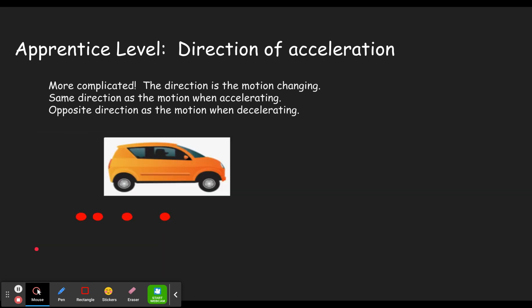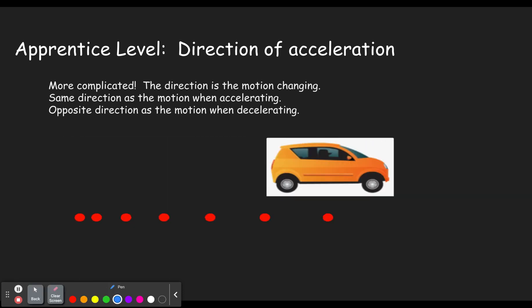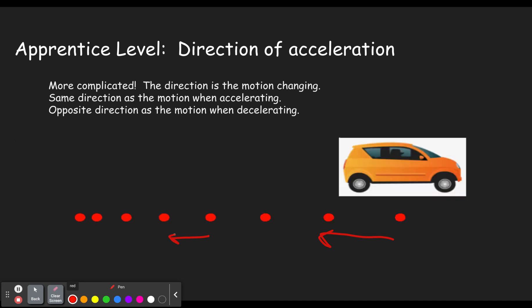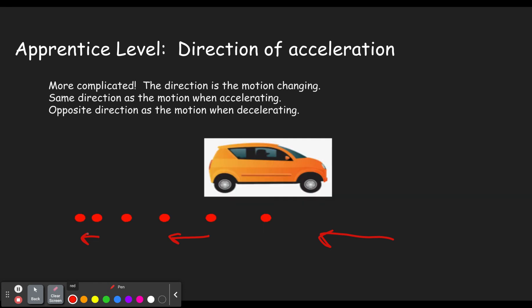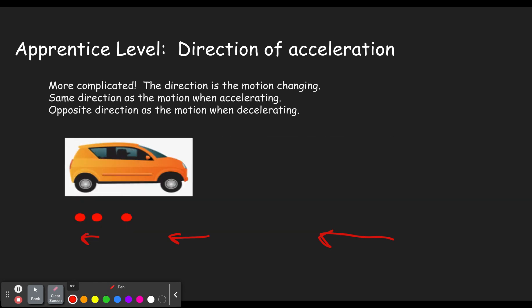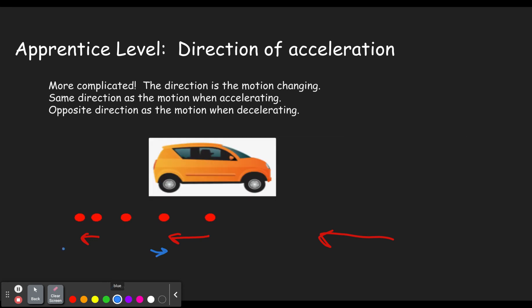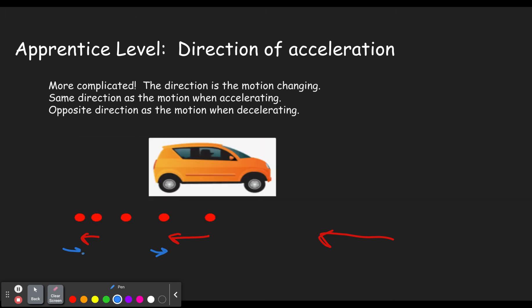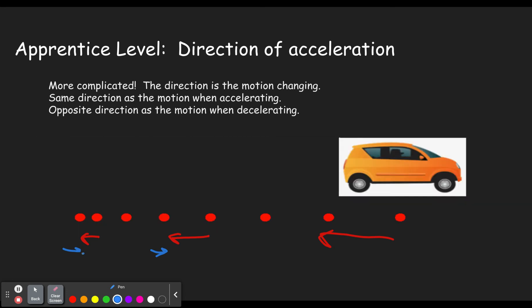The opposite case: when the acceleration is opposite the direction of motion. This car starts out going pretty fast, then medium speed, then really slow — it's clearly slowing down. In English class we'd say decelerating. Drawing the arrows: the arrow shrinks, so the change in velocity is to the right, but the car is moving to the left. So this object is moving to the left but accelerating to the right.